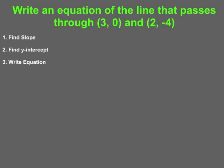We're going to need to write an equation of a line that passes through two different points. From the last video, there are three steps we need to follow. The first step is to find the slope. So I'm going to do that over here — find the slope of these two points. Since we're given two points, we're going to do y2 minus y1 over x2 minus x1.